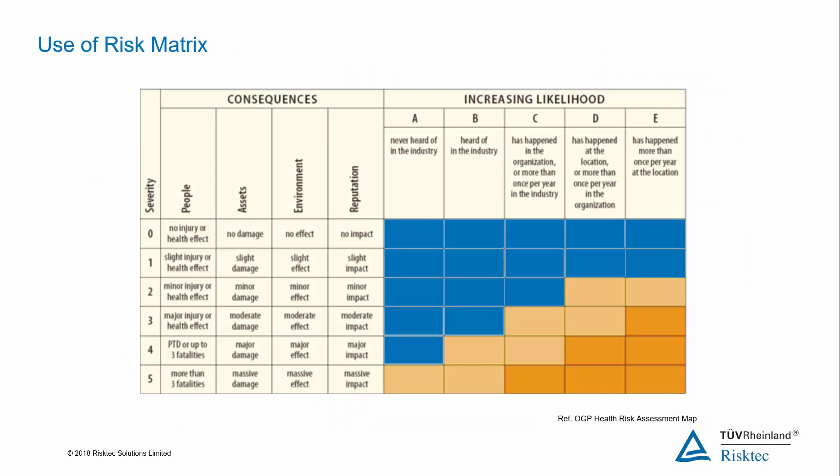Most companies have a standard risk matrix template. If not, there are guidelines available from regulators or industry bodies, such as the example shown here from the International Oil and Gas Producers Association. This is a fairly typical qualitative risk assessment matrix. On the left we have severity and consequence, and across the top we have the likelihood. It looks pretty straightforward, so let's use a few examples to practise using it.